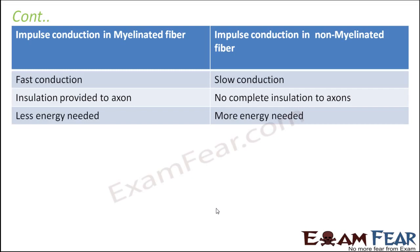Impulse conduction in myelinated vs. non-myelinated nerve fiber: in a myelinated fiber the insulation is more, therefore conduction is fast and less energy is needed. In a non-myelinated fiber, insulation is incomplete, so conduction is slow and more energy is needed.